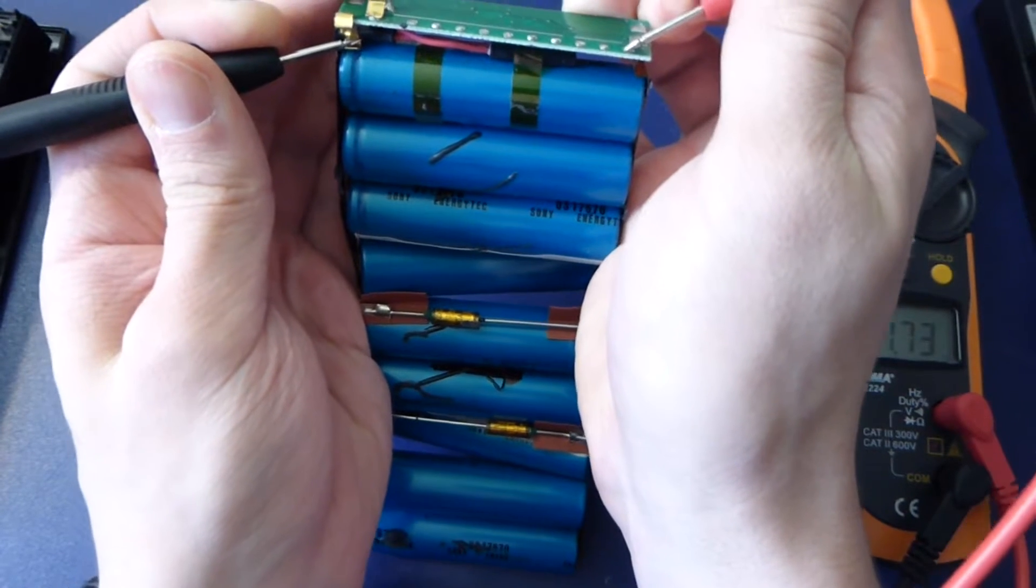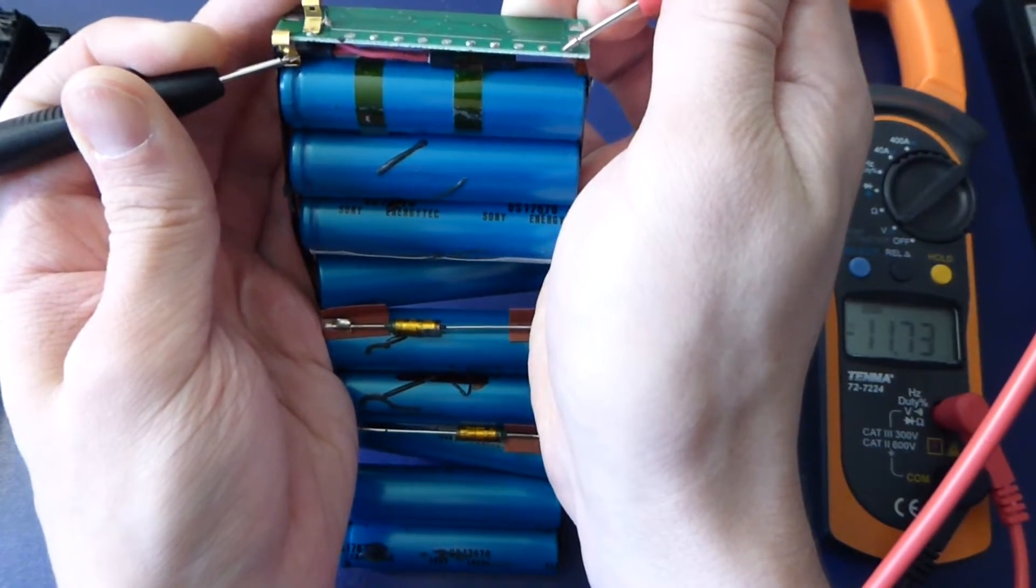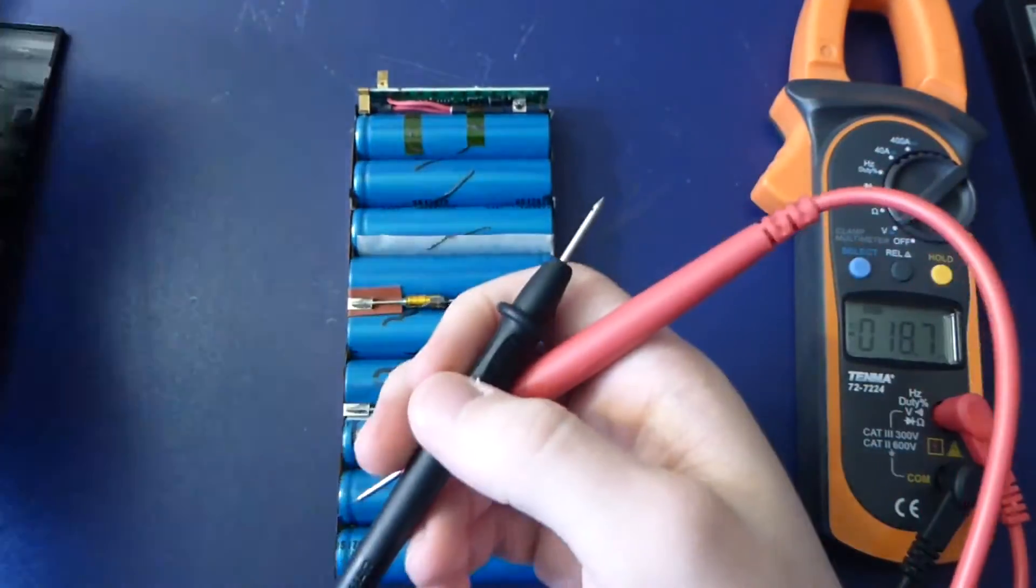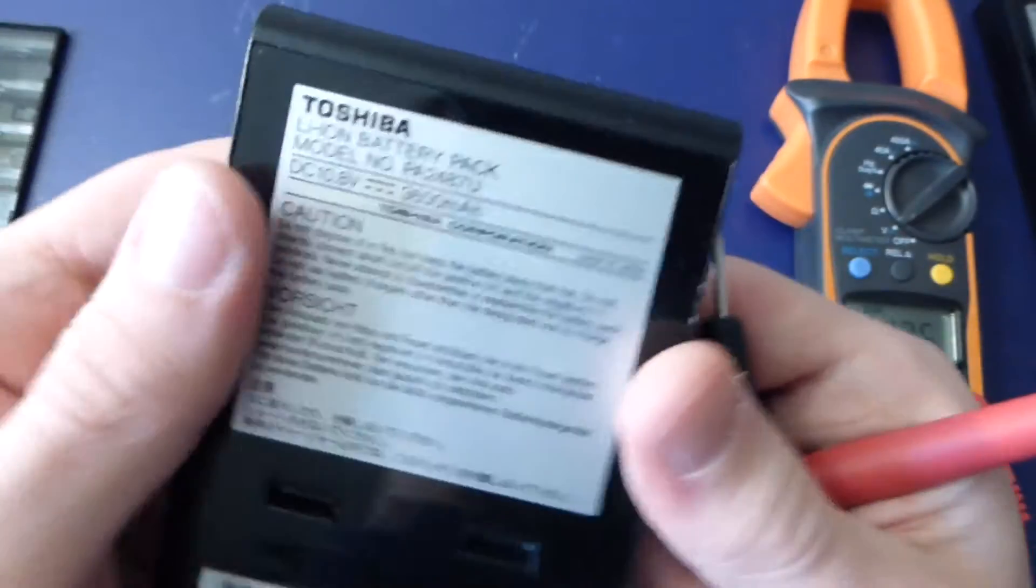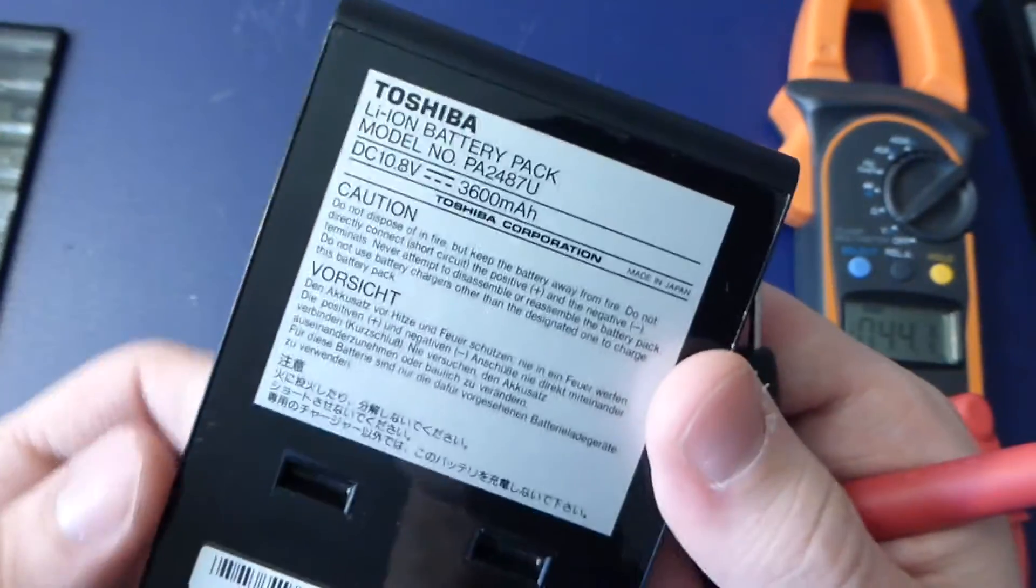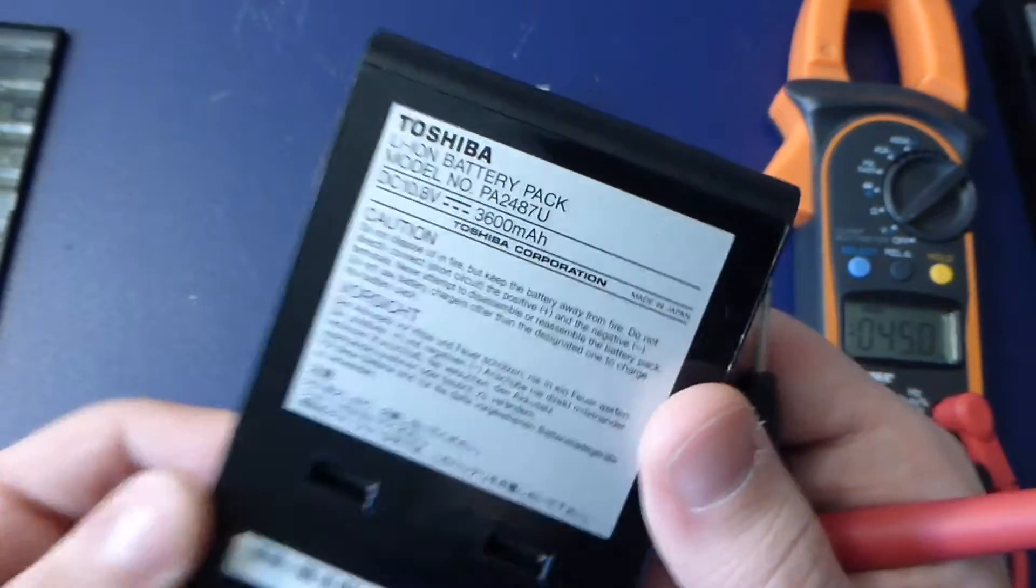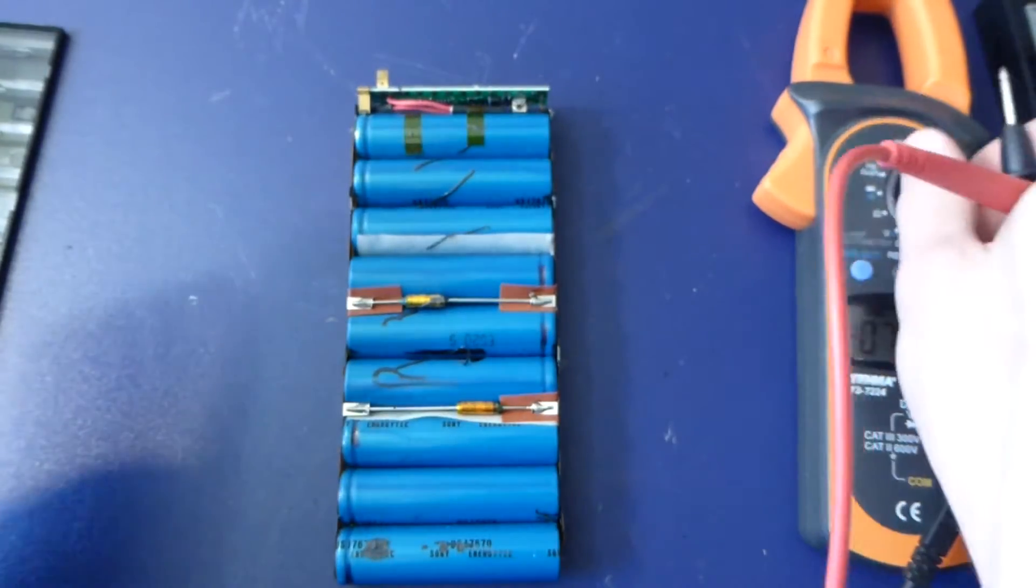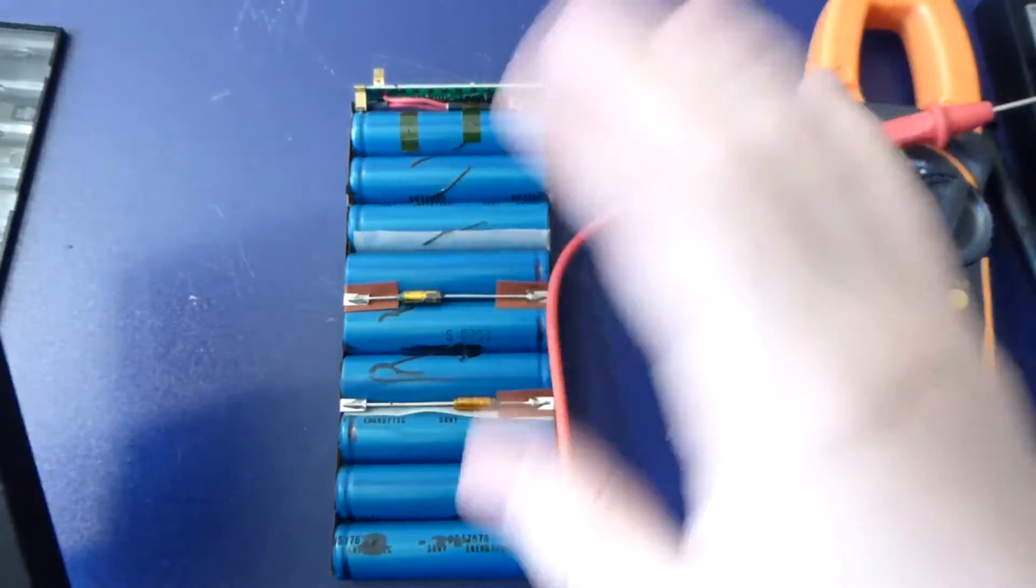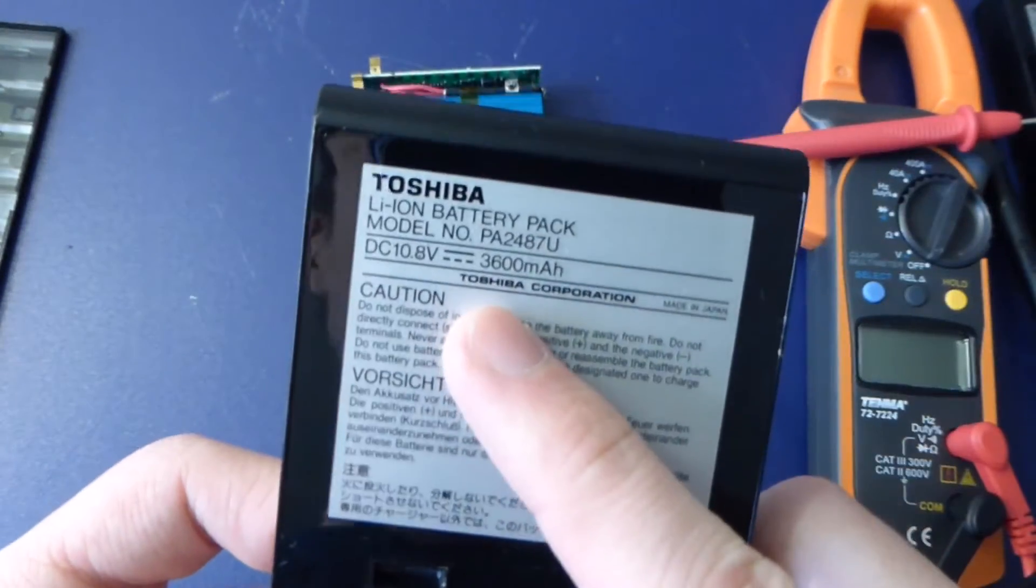Let me check the terminals. There we go - 11.73 volts. This pack is supposed to be 10.8 volts, so that's actually not bad. I'm kind of surprised. I would have expected this to have some seriously dead cells, be like six volts or something.